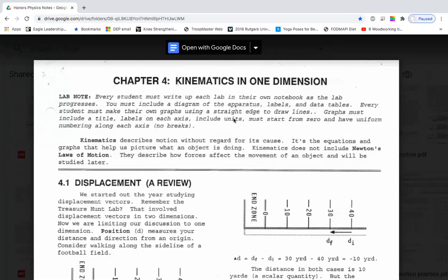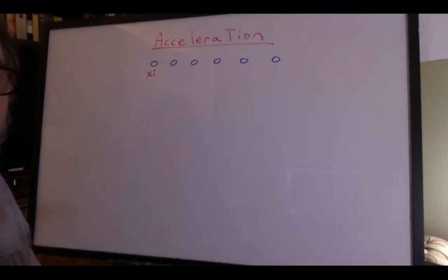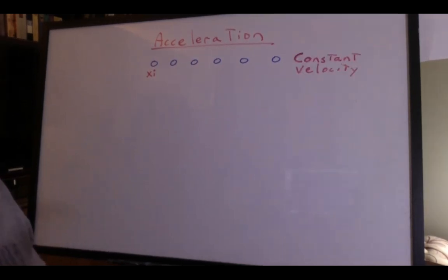We'll continue with chapter four. Now we should say a few words about acceleration. If you have a strobe picture where the ball starts on the left and you see it moving to the right with an equal interval for each moment of time, then it's going at a constant velocity.